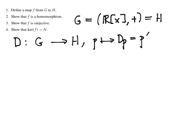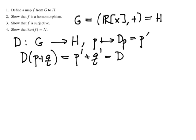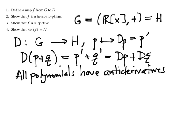Since the map is already given to us, we go straight to step 2: showing D is a homomorphism. We compute D of (P + Q) where P and Q are polynomials. We know the derivative of P + Q is the sum of the derivatives: P-prime plus Q-prime, or DP plus DQ. So D is a homomorphism. Step 3: is D surjective? We need to take some polynomial in H and show it comes from something in G — essentially asking whether every element of H has an antiderivative. Since every polynomial has an antiderivative, D is surjective.